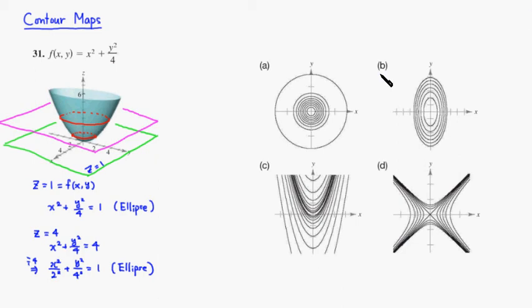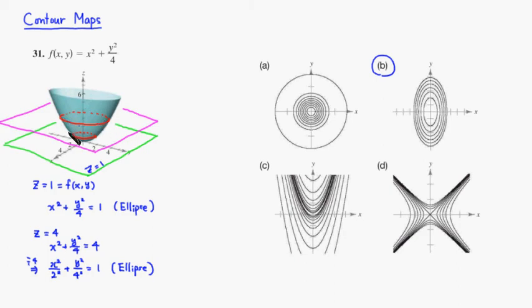So this is the one right here — you can see that there are a bunch of ellipses put together. That's how you choose the right contour map: take a surface and slice it through by a bunch of planes parallel to the XY plane and see what kind of image you can get. I hope that was clear. I'll see you in the next one.